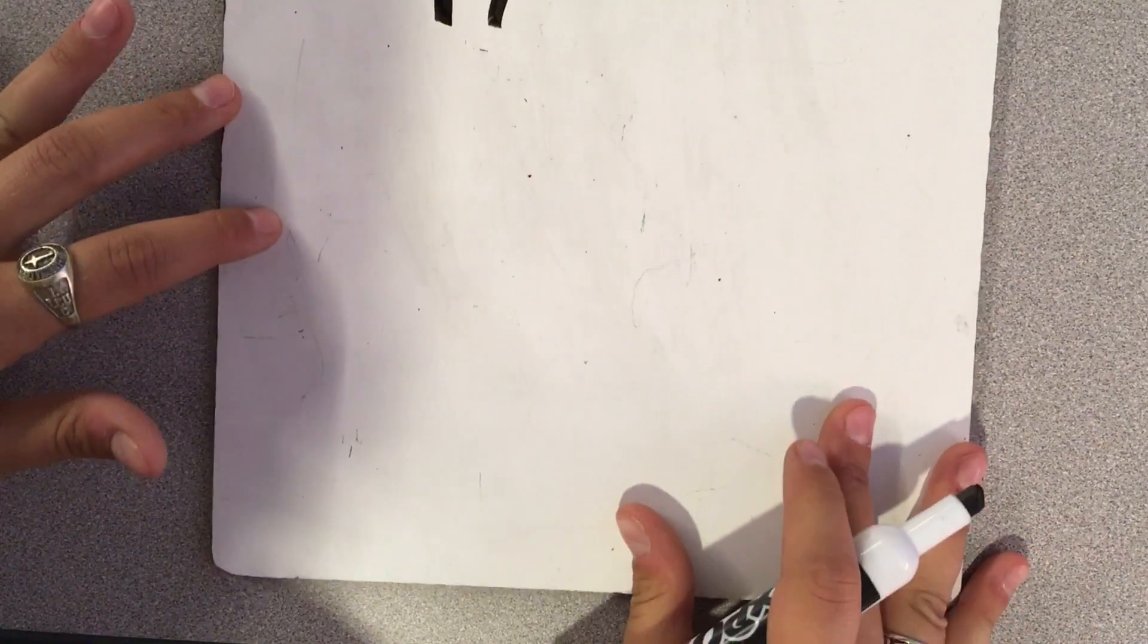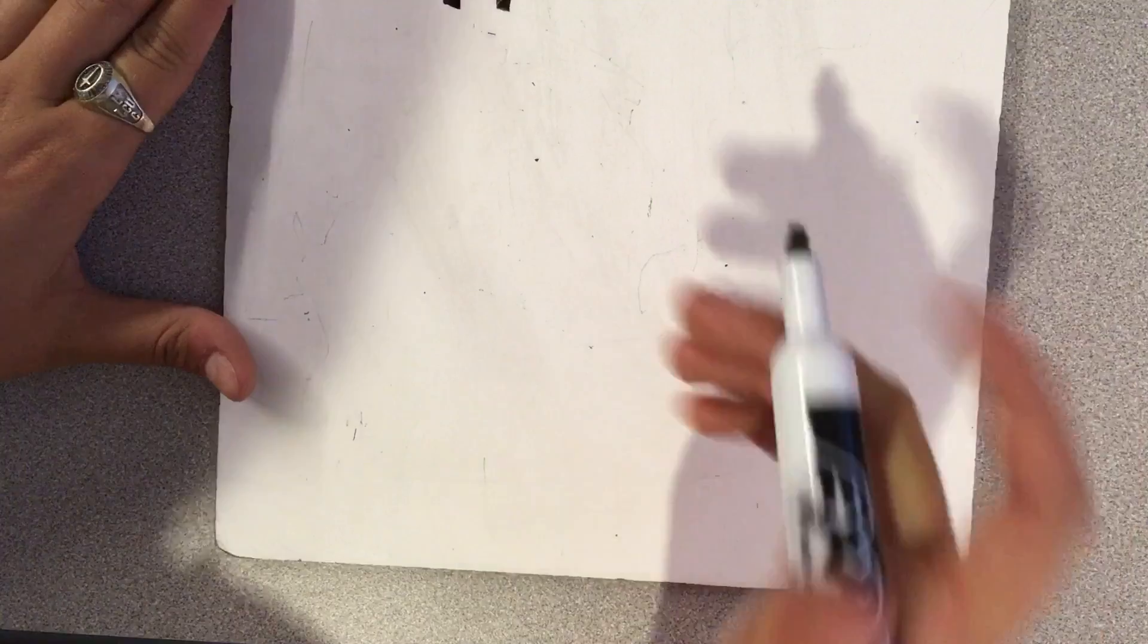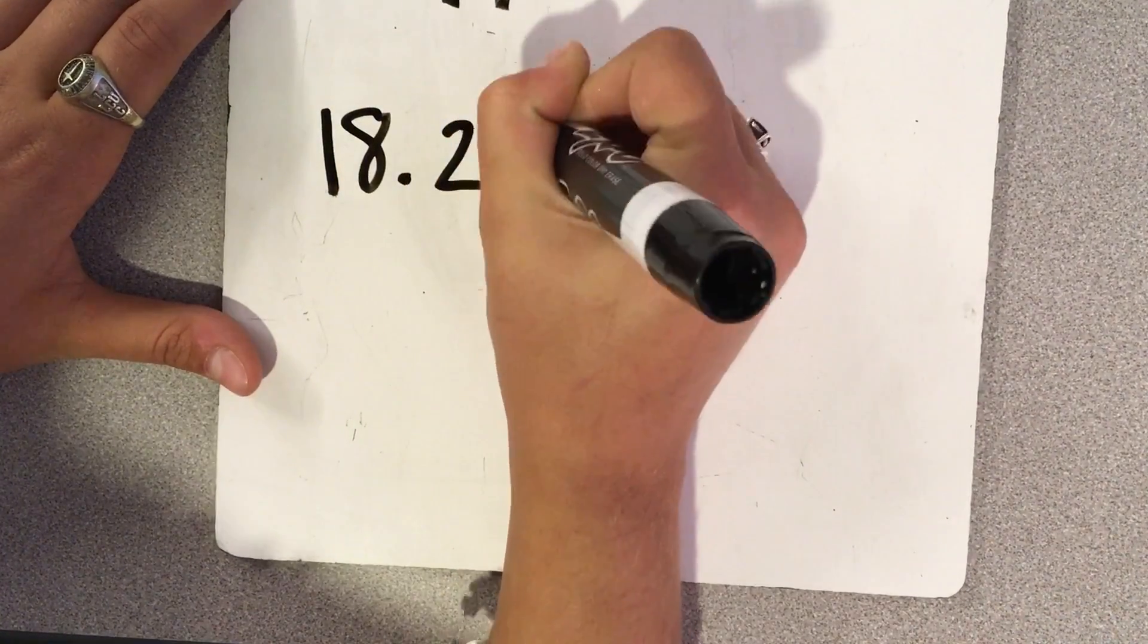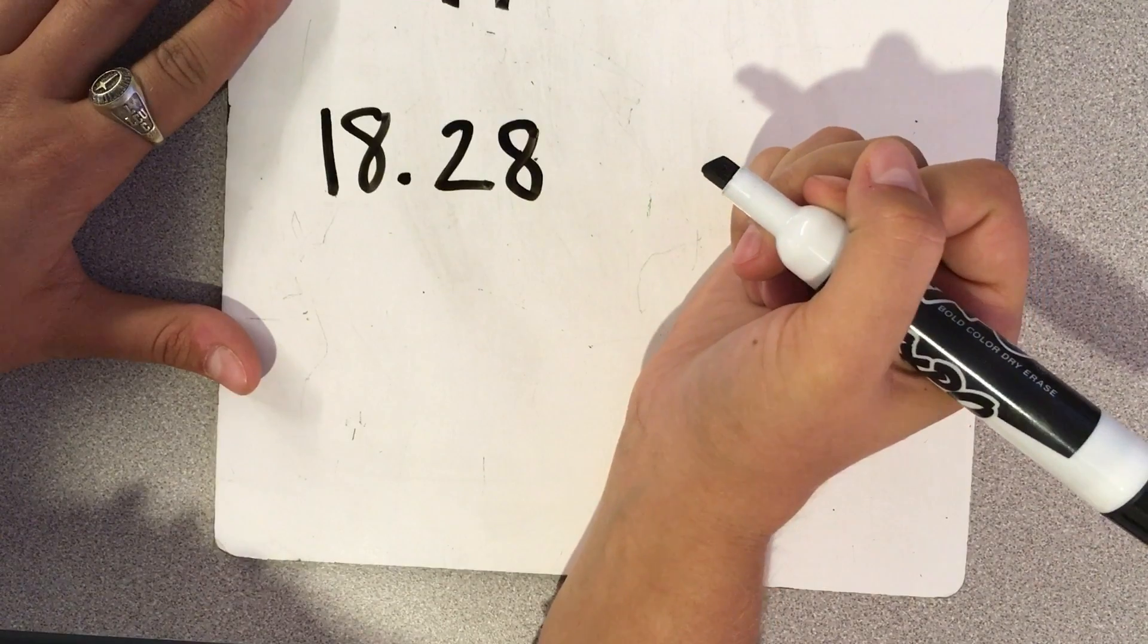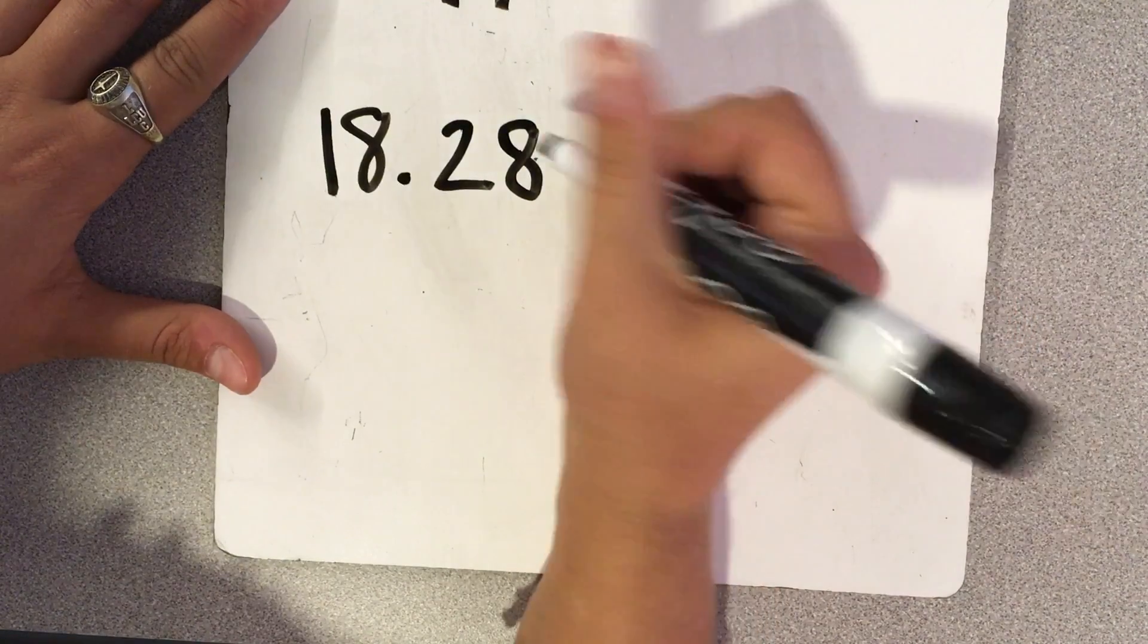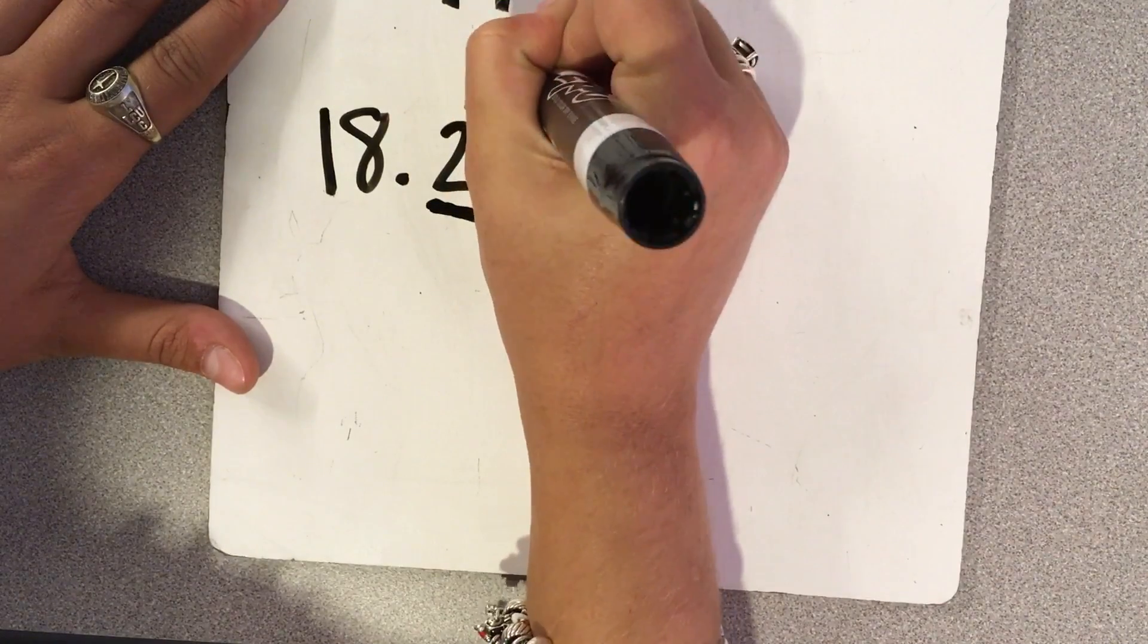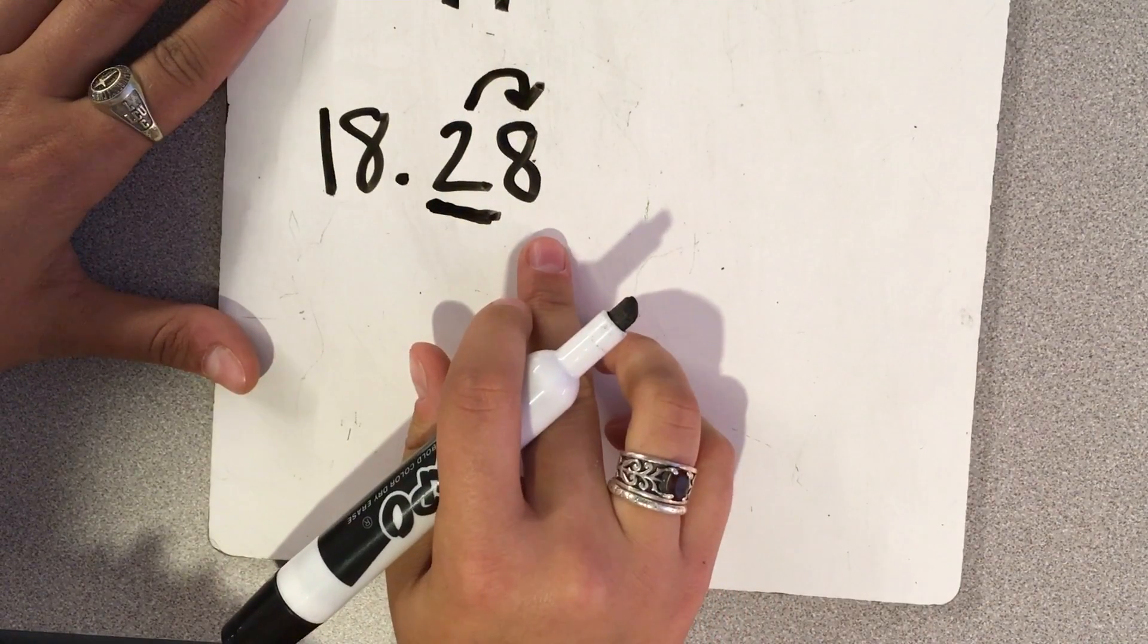Now, if we wanted to round to the nearest tenth, here's another example, 18 and 28 hundredths. If it's asking me to round to the nearest tenth, I would underline that place value, look next door, and because this 8 is 5 or more, it tells this number to go up.